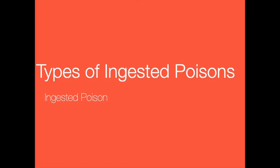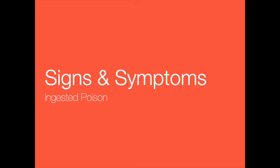A person who has ingested poison generally looks ill and displays symptoms common to other sudden illnesses. If you even have a slight suspicion that a patient has been poisoned, seek immediate medical assistance. Signs and symptoms include nausea, vomiting, or diarrhea; chest or abdominal pain; difficulty breathing; sweating; changes in level of consciousness; seizures; headache or dizziness; weakness; irregular pupil size; burning or tearing of the eyes; abnormal skin color; and burn injuries around the lips, tongue, or skin around the mouth.